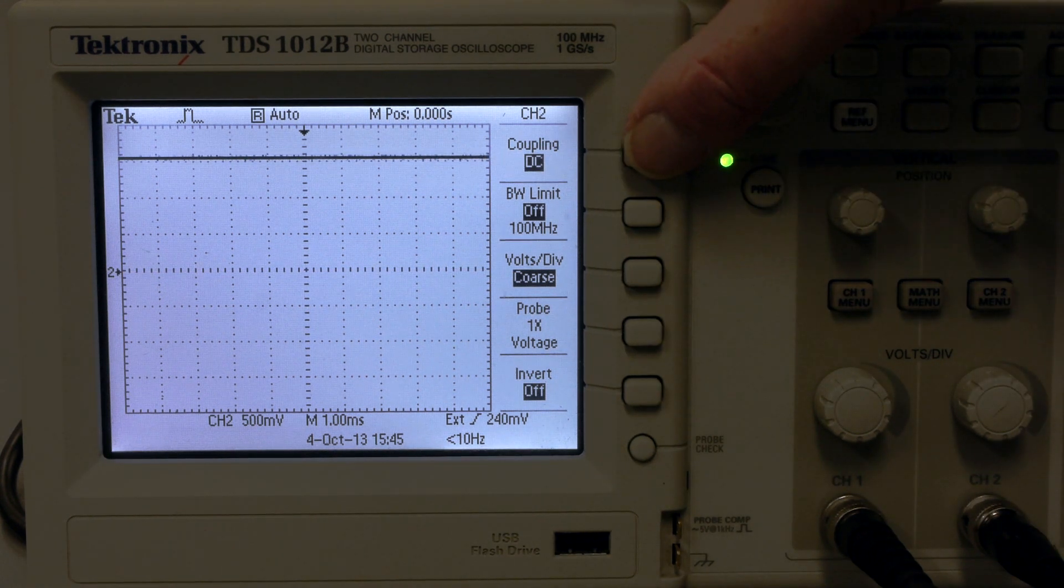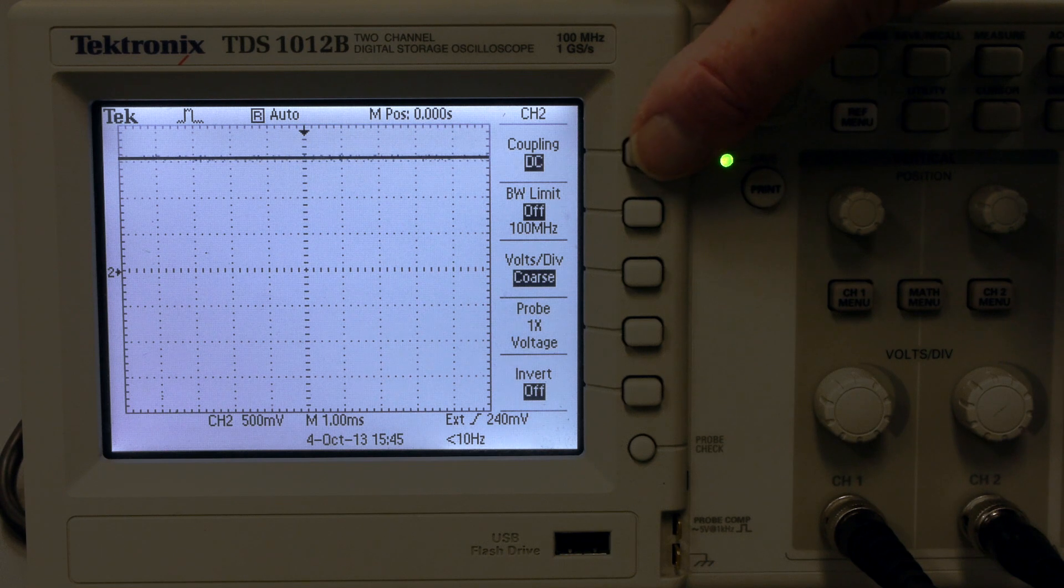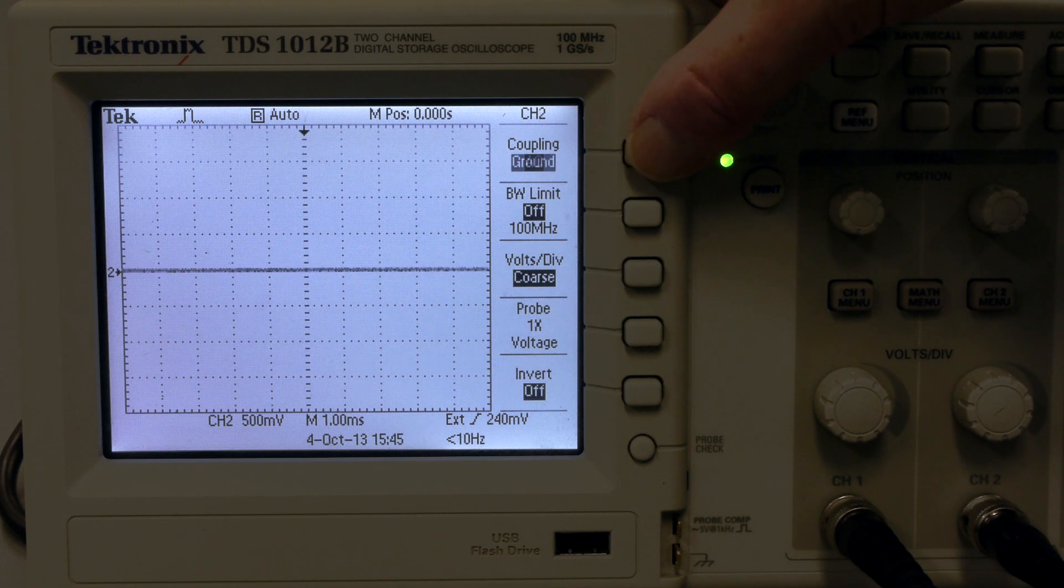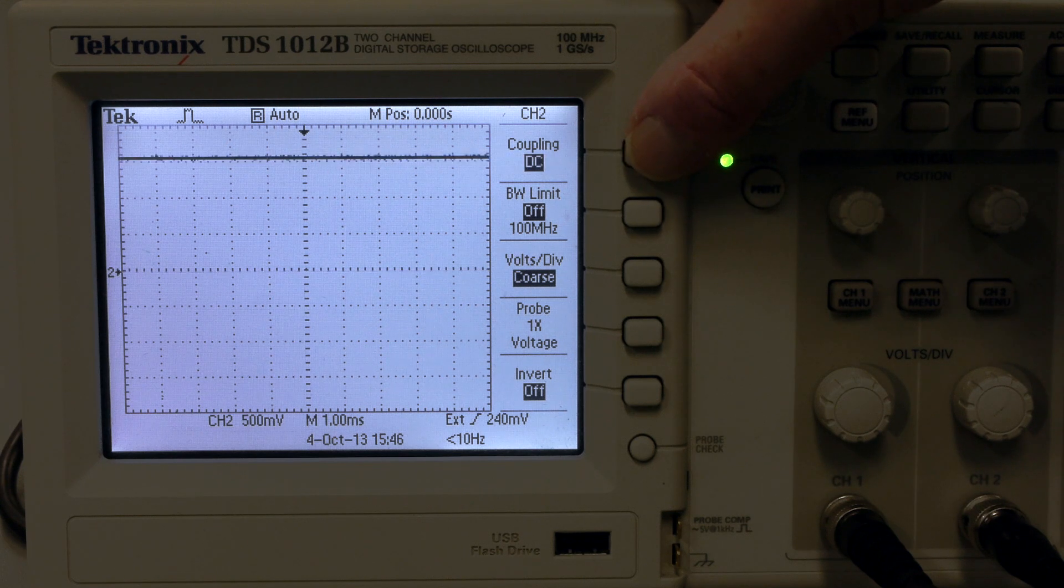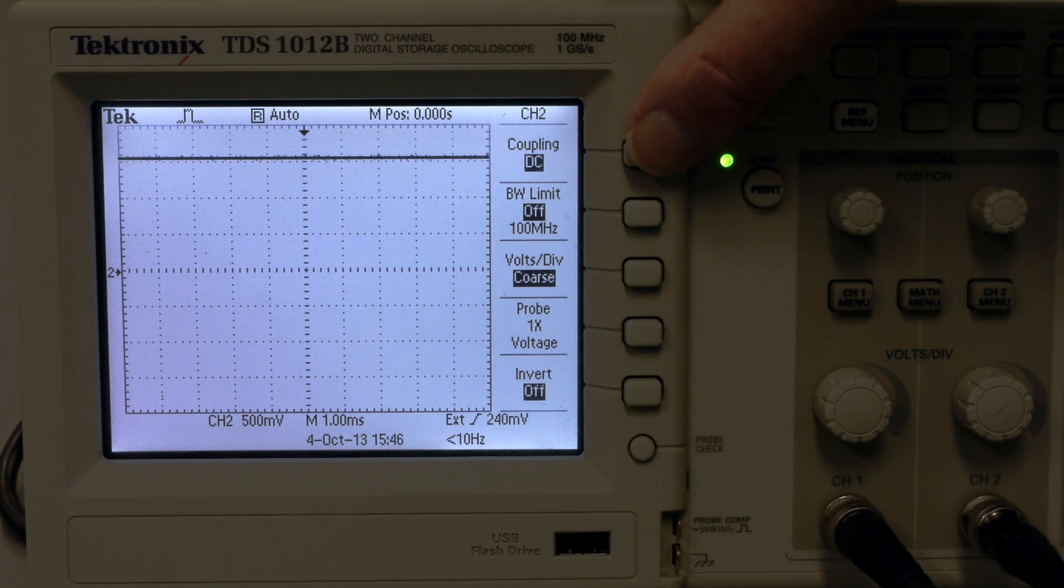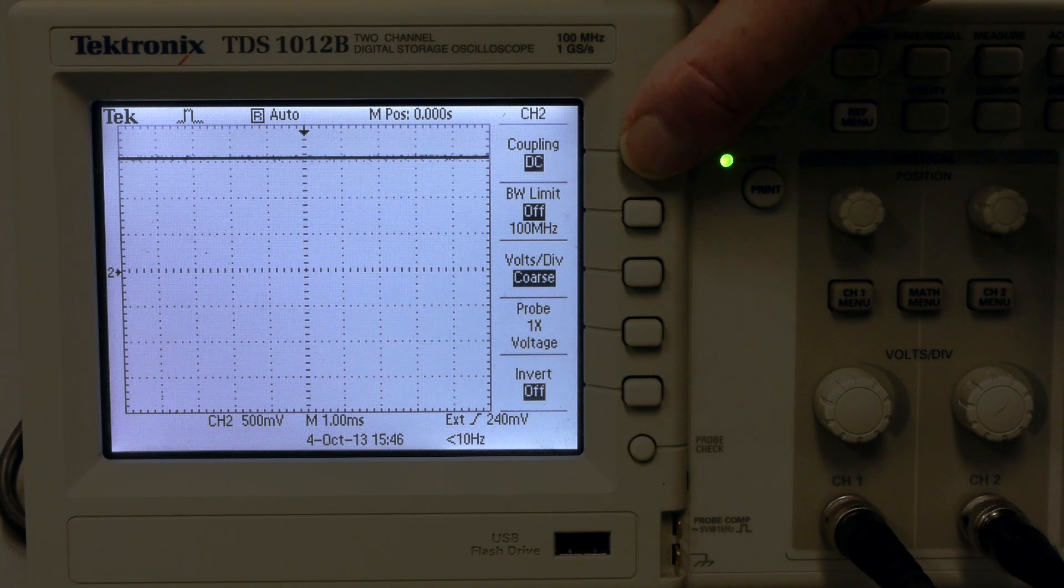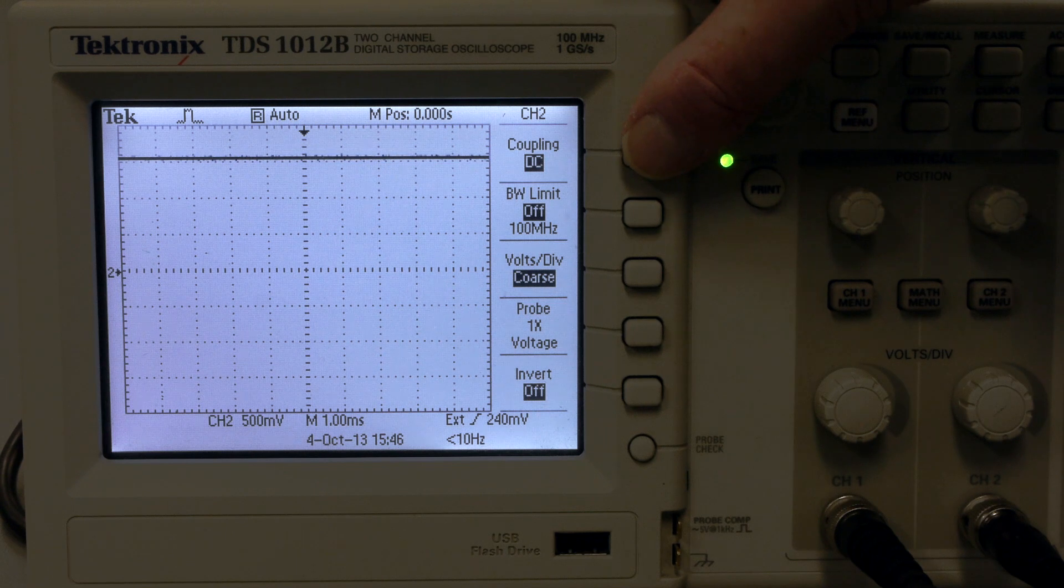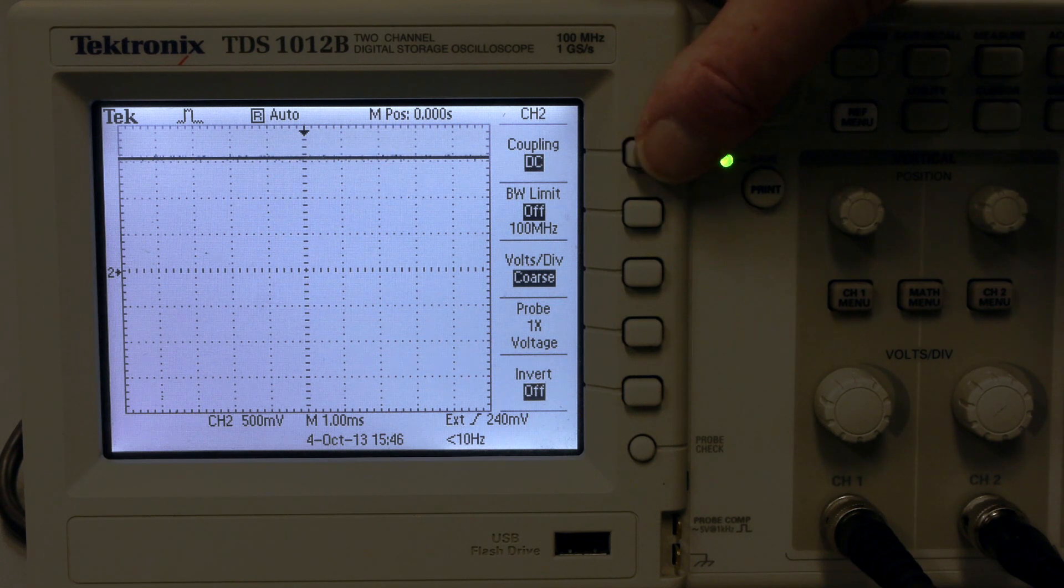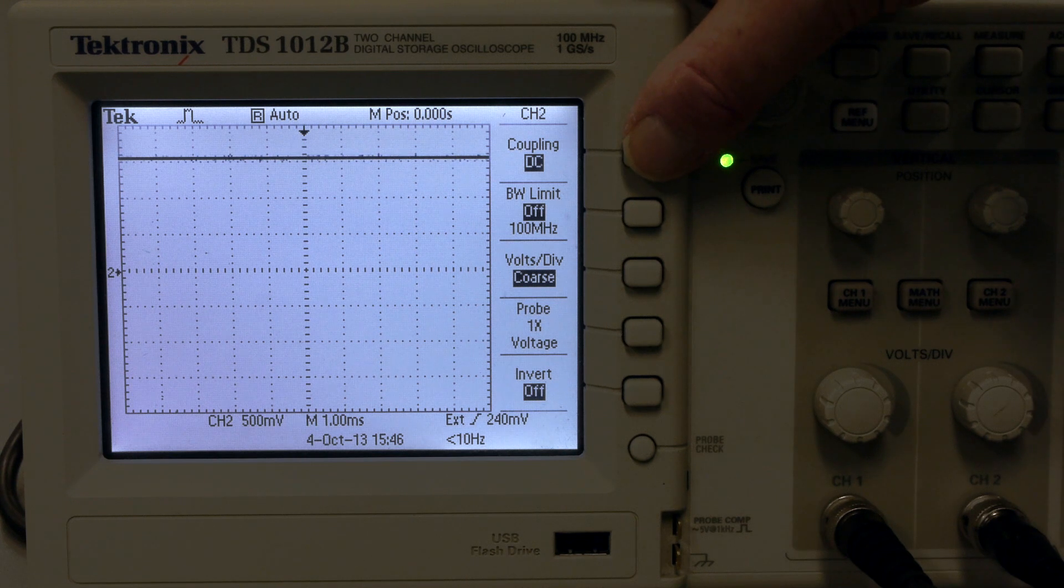Also note here, this button has another function. It has a thing called DC coupling, AC coupling, and ground, as we said earlier. DC refers to a voltage that's a direct current, which does not change direction. AC refers to a voltage or a current that changes direction. DC coupling allows, interestingly enough, DC and AC through. Whereas AC coupling allows only AC or variable voltage through.